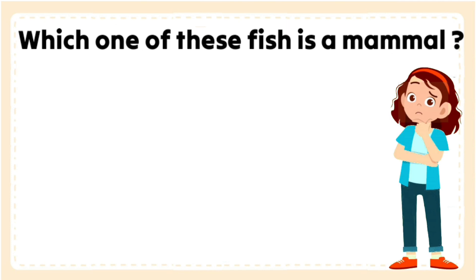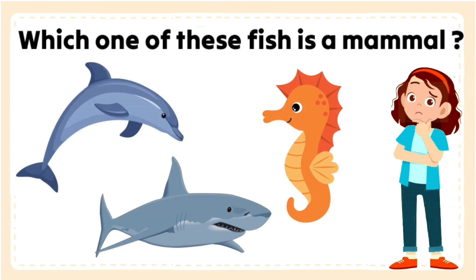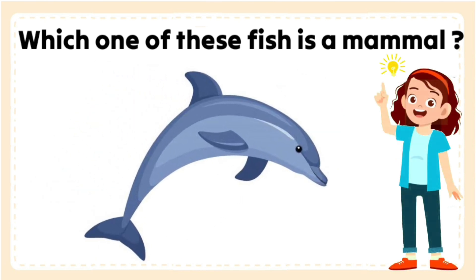Which one of these is a mammal? The correct answer is dolphin. Dolphins are mammals. Like every mammal, dolphins are warm-blooded and they breathe air using lungs.